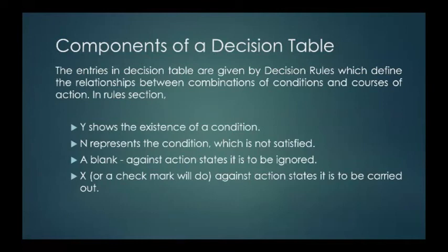The entries in decision table are given by decision rules, which define the relationships between combinations of conditions and courses of action. In rule section, Y shows the existence of a condition and N represents the condition which is not satisfied. A blank against action states it is to be ignored. X or a check mark against action states it is to be carried out.